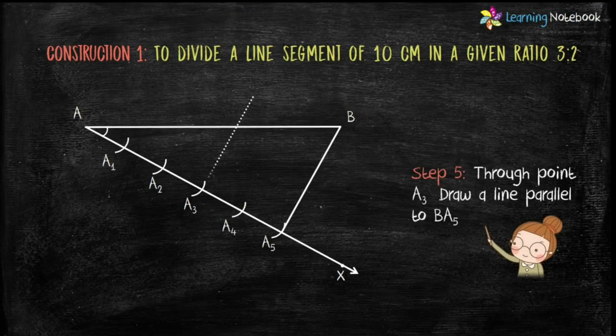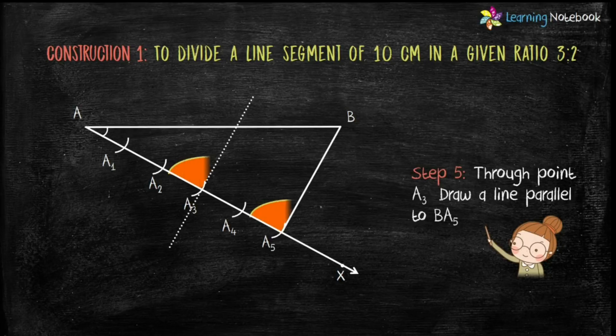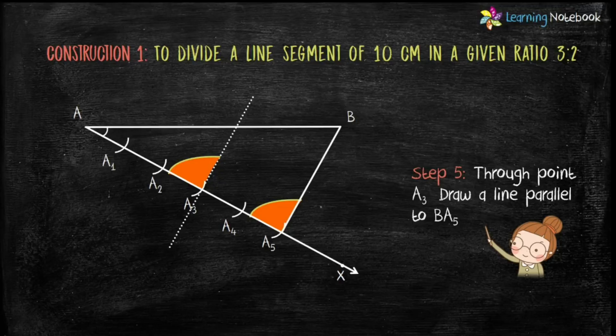Step 5: Through point A₃, draw a line parallel to BA₅. We will do this by making an angle equal to ∠AA₅B. Both these angles are corresponding angles. Now I will tell you how to draw these angles.